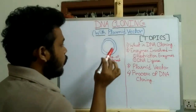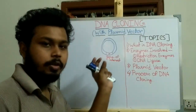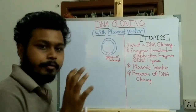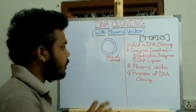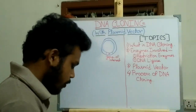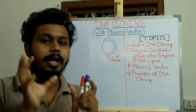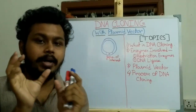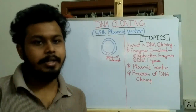Now we want to clone this gene A from the whole genomic DNA. So we have to cut this gene A from the whole genomic DNA, and this is done by restriction enzymes. Now what is a restriction enzyme?